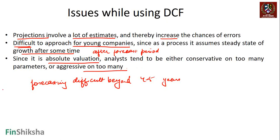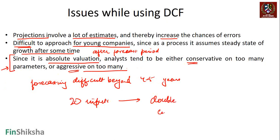This is a problem we'll appreciate better once we've built a DCF model for a company. With maybe 20 input parameters in a financial model, we either tend to be ultra-conservative on most of them or aggressive on most of them, which results in some form of double counting of either growth or slowdown. We have to be careful with this while doing valuation.